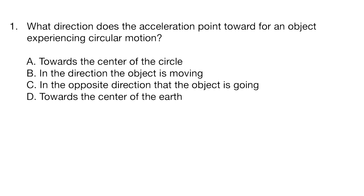Question 1. What direction does the acceleration point toward for an object experiencing circular motion? A towards the center of the circle, B in the direction the object is moving, C in the opposite direction that the object is going, D towards the center of the Earth.